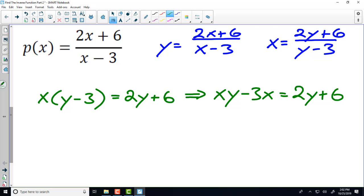Now we want to get everything with a y on one side, and everything without a y on the other side. So what I'm going to do is I'm going to add 3x to both sides, and I'm also going to subtract 2y from both sides. And if you do that, you will get xy minus 2y equals 3x plus 6.